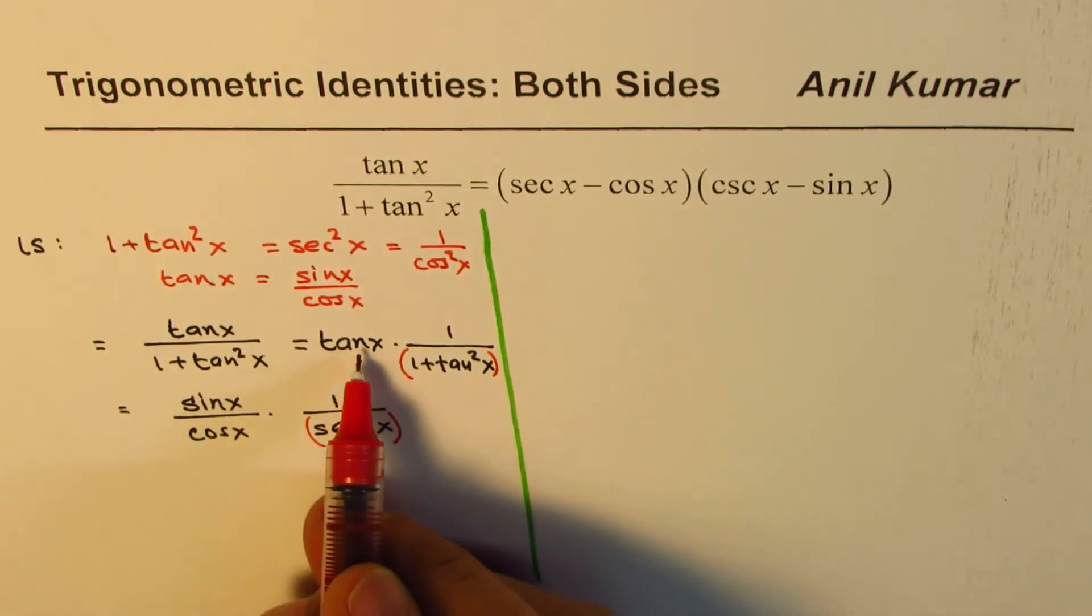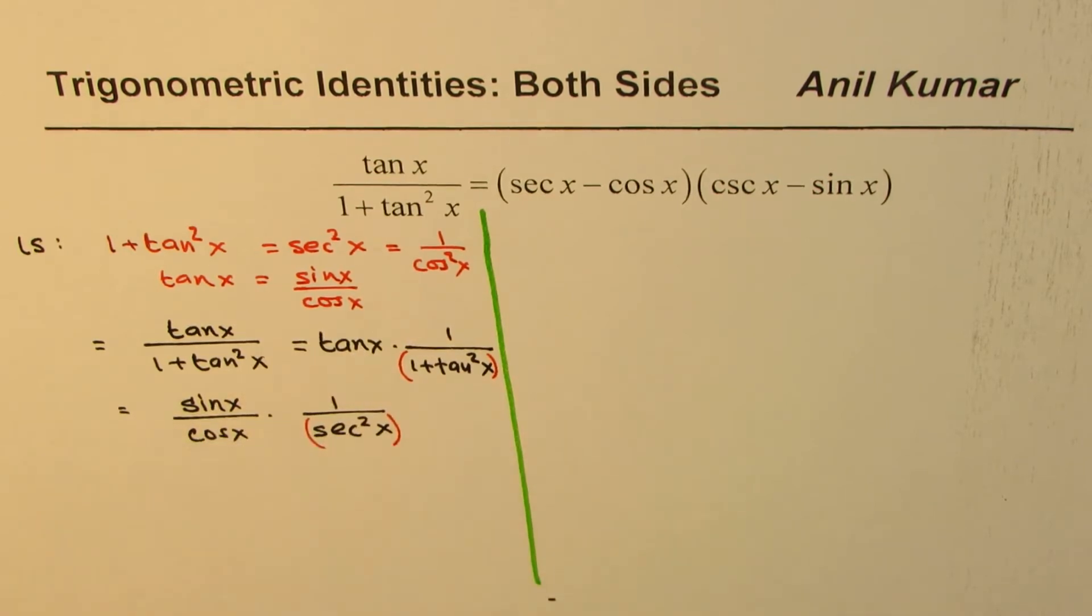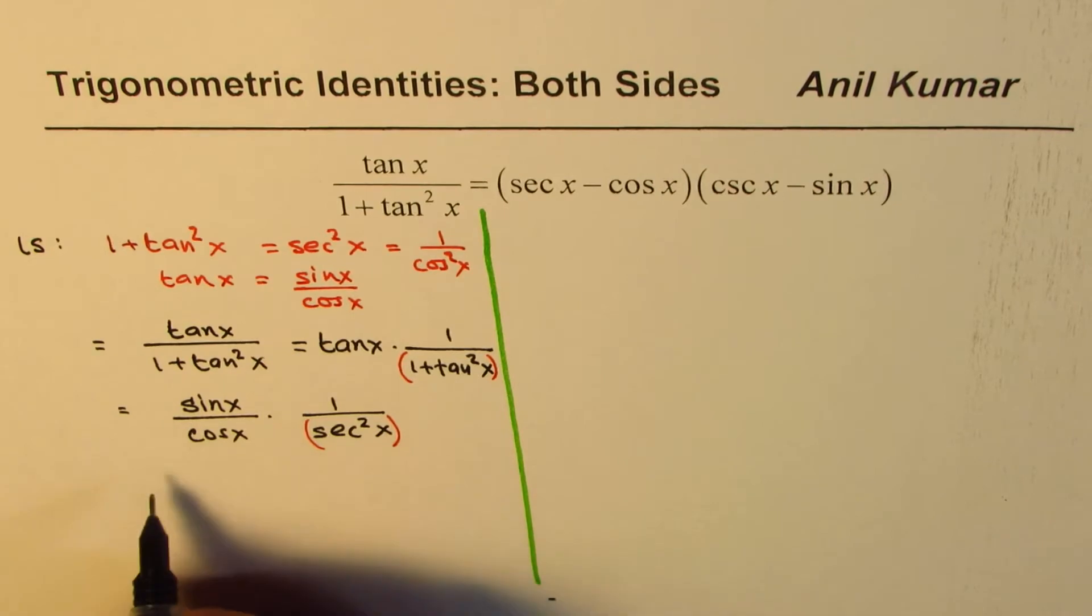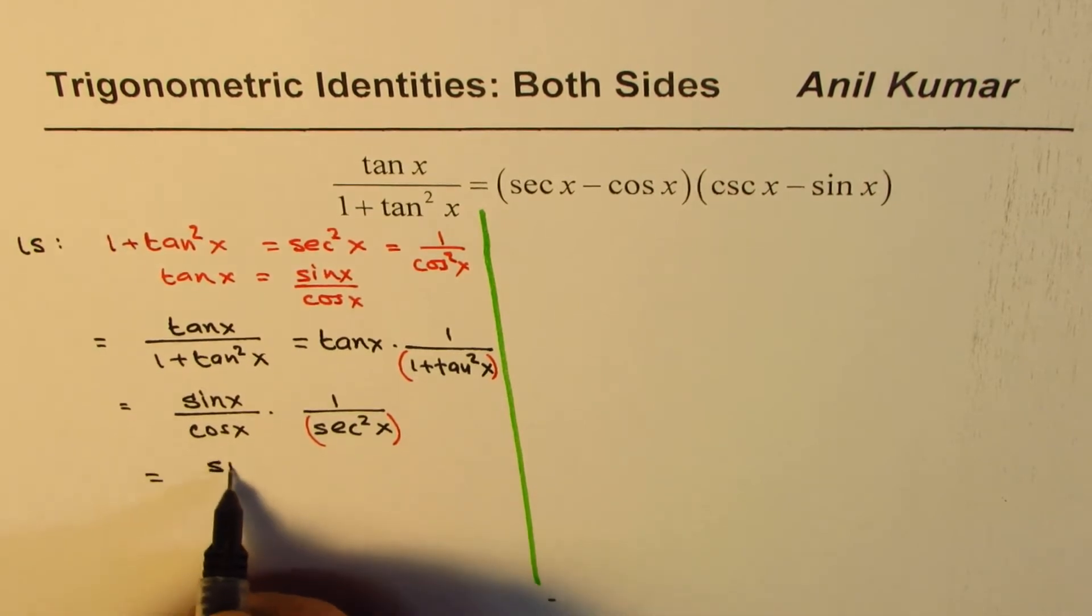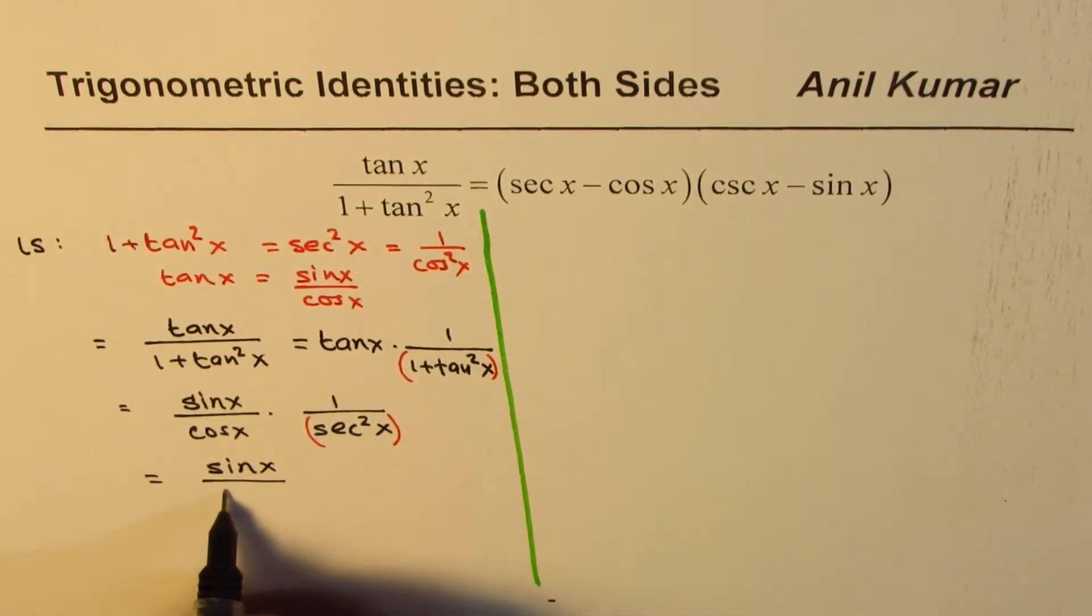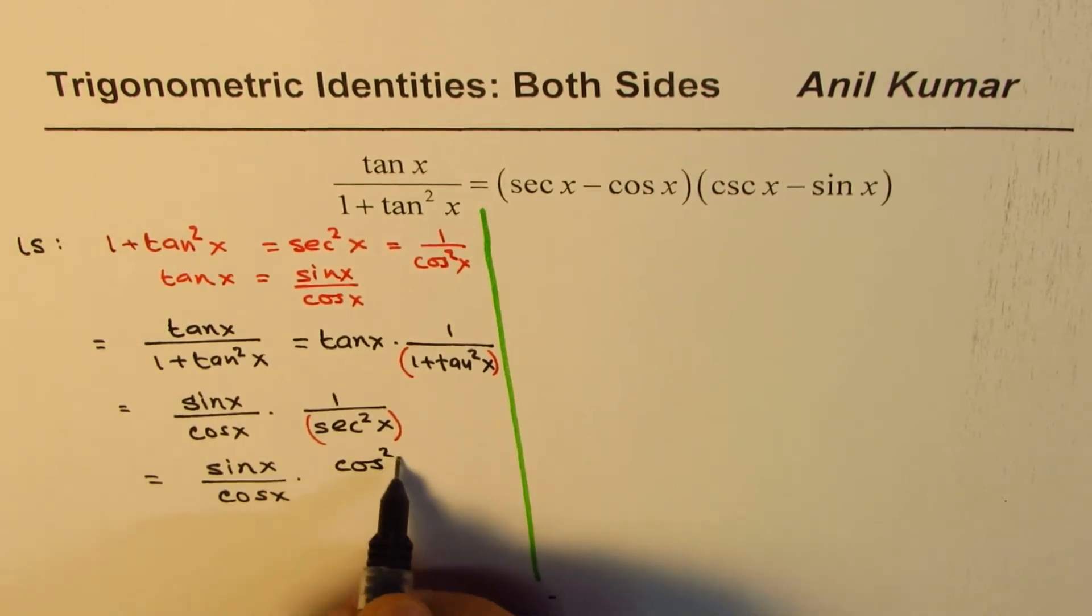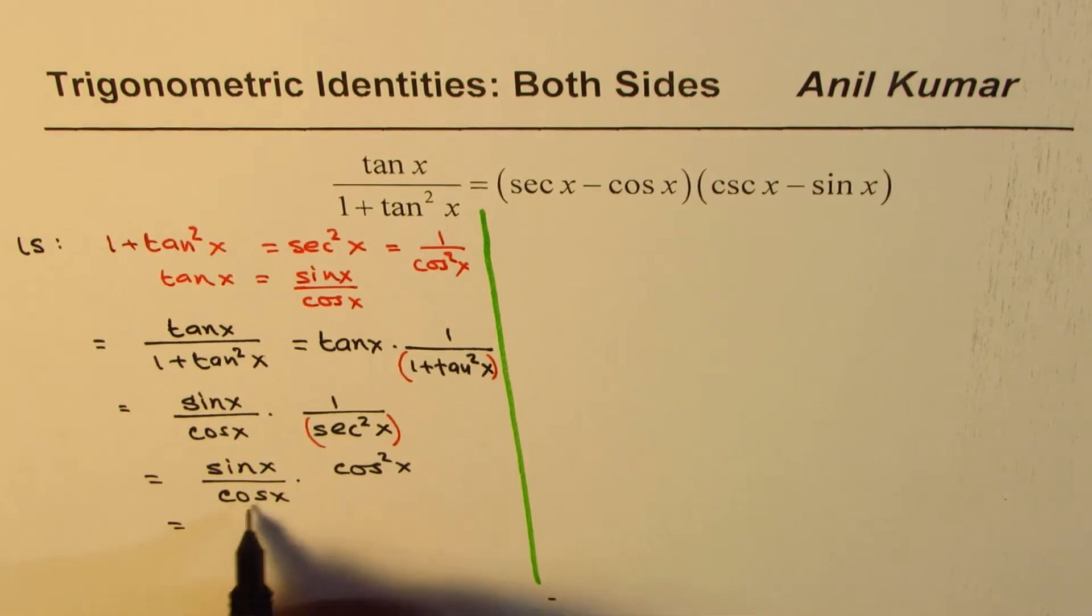So I could write this as sin x over cos x times cos square x, perfect. Now one of these cosines get cancelled, so we get sin x cos x on the left side.